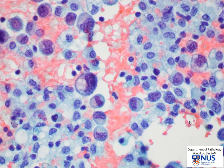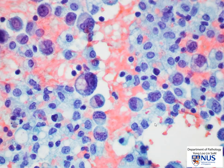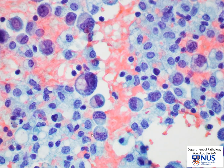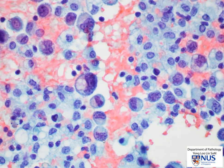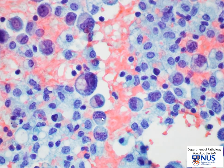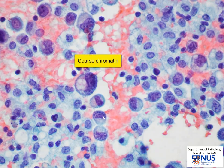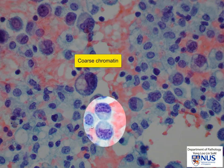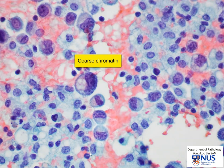It is actually quite difficult to find mesothelial cells. At higher magnification, we can see how coarse the chromatin is in the malignant cells compared to that in the macrophages.